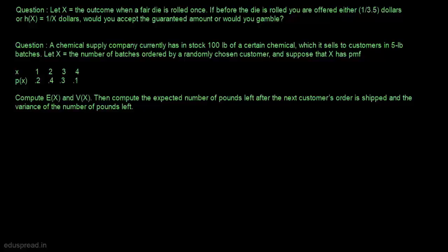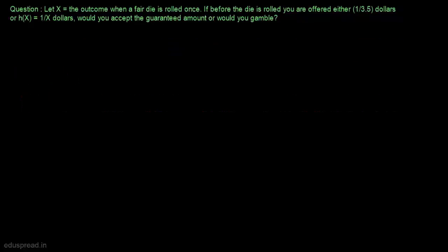In this lecture, I am going to solve these two questions. Let's start with question number one. Let x be the outcome when a fair die is rolled once. If before the die is rolled, you are offered either 1 divided by 3.5 dollars or h(x) equal to 1 divided by x dollars, would you accept the guaranteed amount or would you gamble?